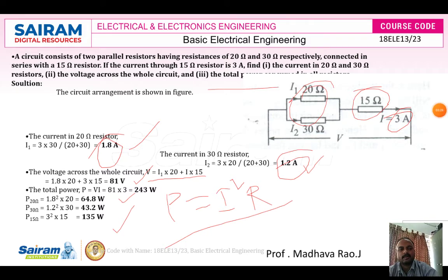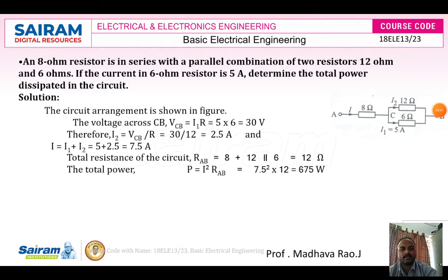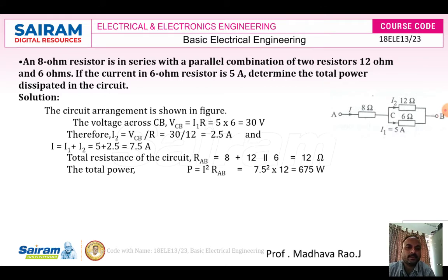Next problem: an 8 ohm resistor is in series with a parallel combination of two resistors, 12 ohm and 6 ohm. The current in the 6 ohm resistor is 5 amperes. Determine the total power dissipated in the circuit.